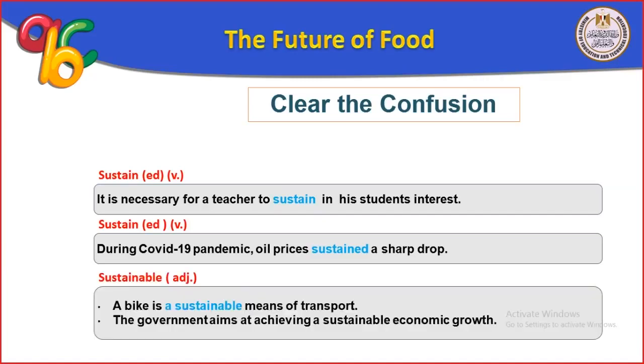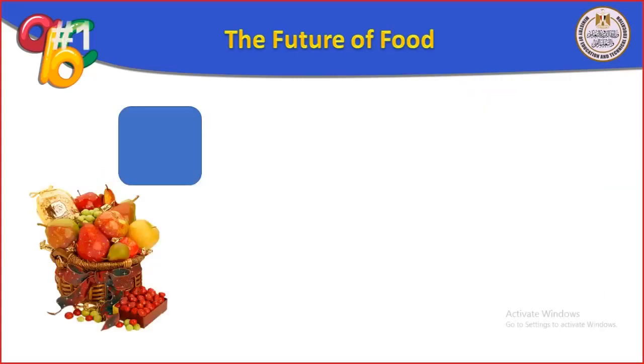Sustainable (المستمر) — a bike is a sustainable means of transport, and the government aims at achieving sustainable economic growth.